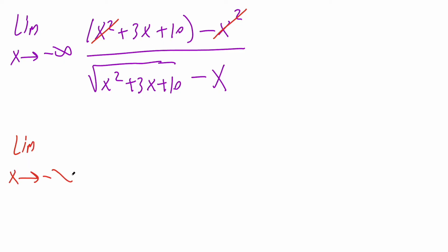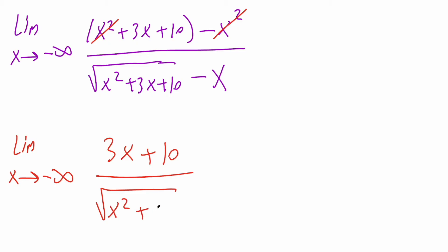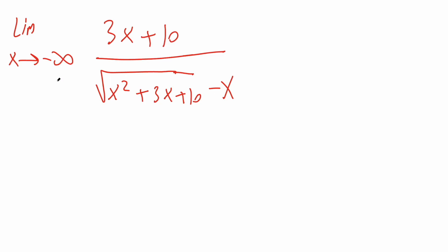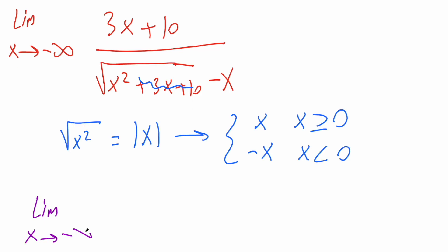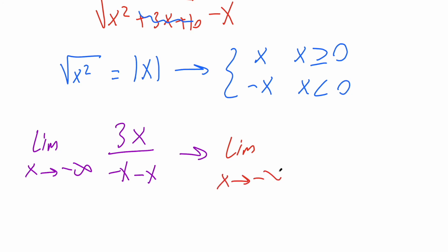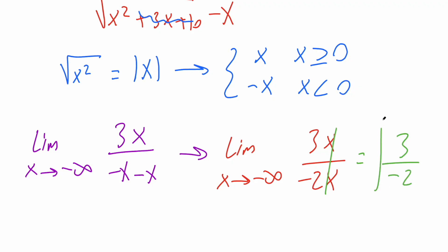We have the limit as x approaches negative infinity of 3x plus 10 divided by the square root of x squared plus 3x plus 10 minus x. Because our limit is approaching infinity, we focus on the highest power. The numerator becomes 3x. The square root of x squared behaves like negative x in this case, so the denominator becomes negative x minus x, which is negative 2x. The x's cancel, and our final answer is 3 divided by negative 2.